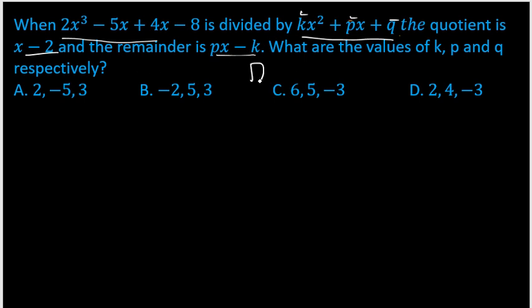Remember there is a formula: dividend equals divisor times quotient plus remainder. So our dividend is 2x³ minus 5x plus 4x, which is just minus x because -5x plus 4x is -x only, minus 8. This is equal to the divisor kx²...